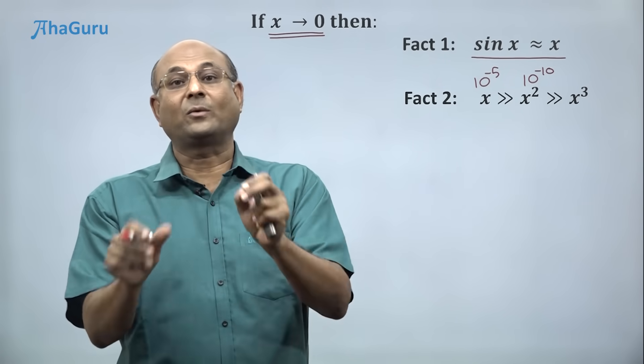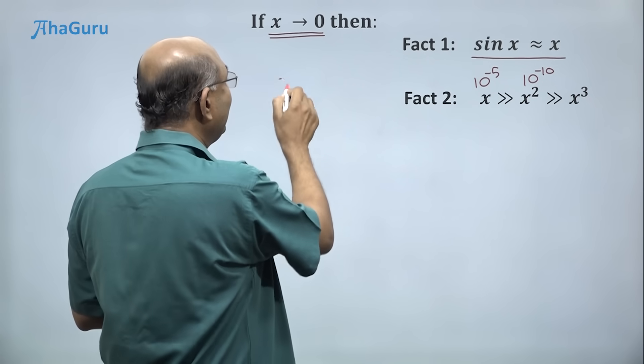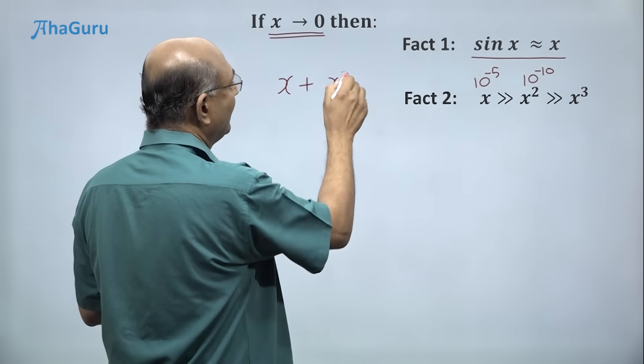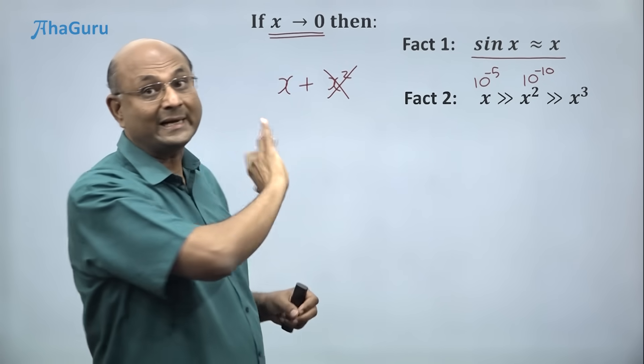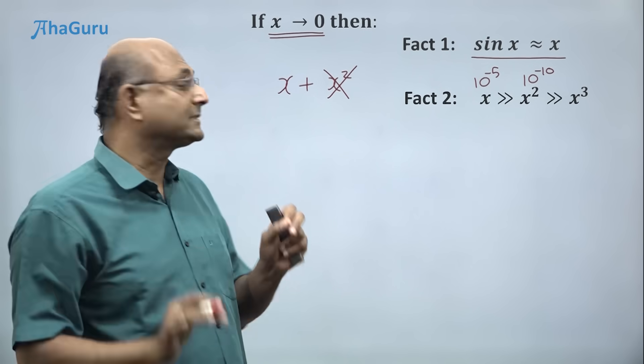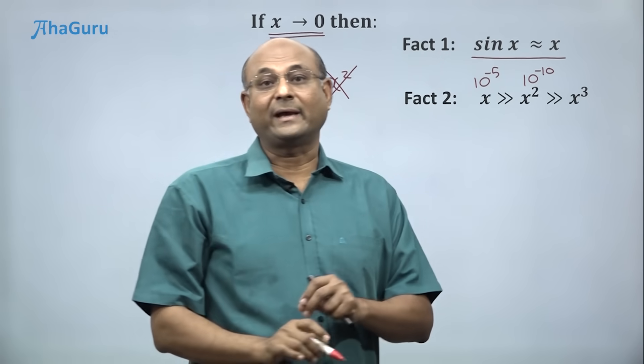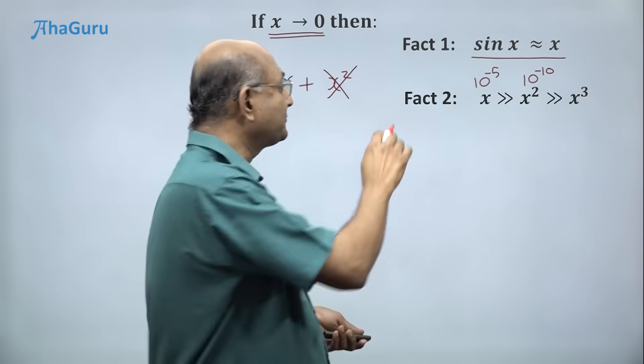So when you have x and x square together, you can ignore x square. You can just completely ignore that and say this is approximately x. So compared to x, x square can be ignored. That is fact number 2.